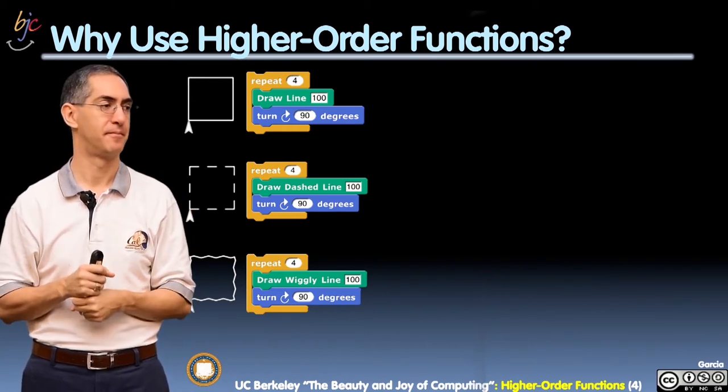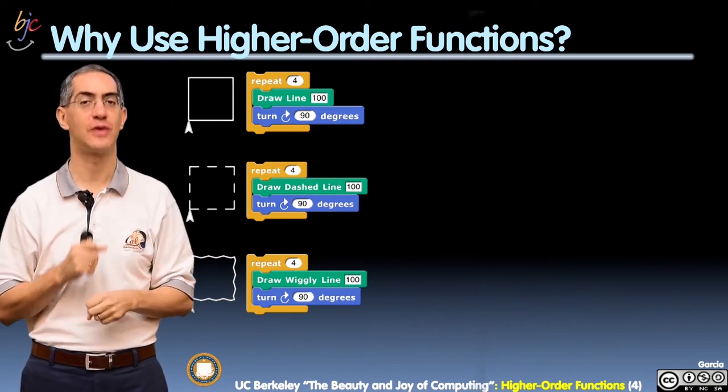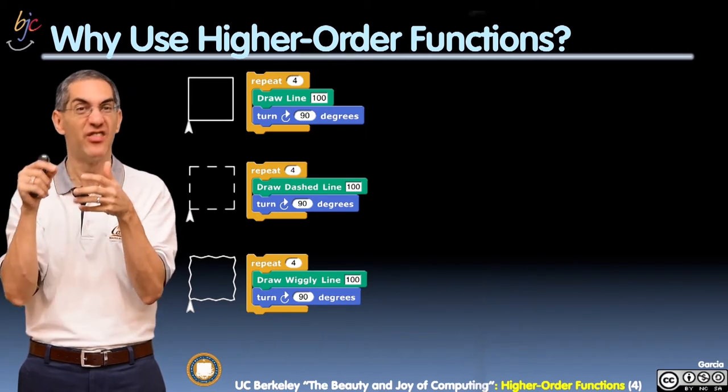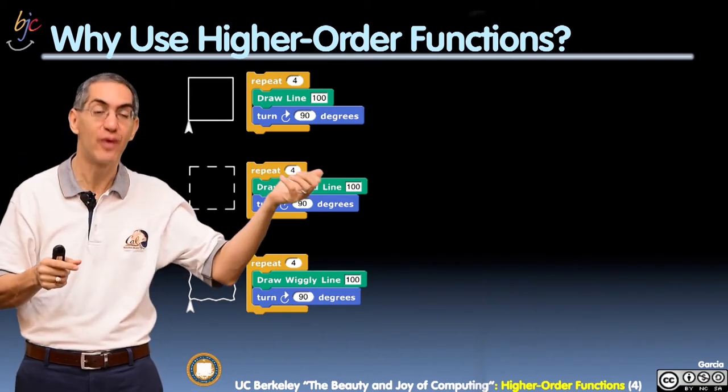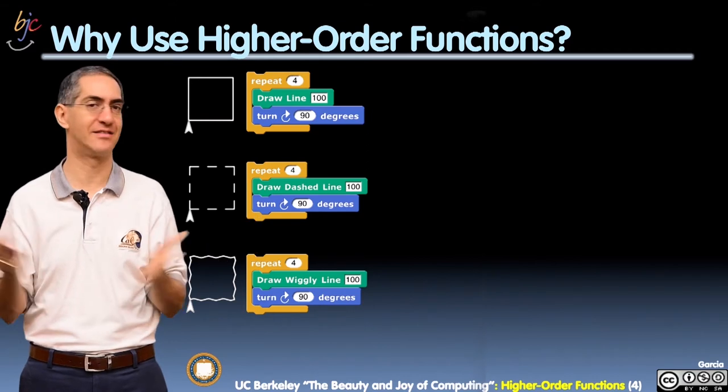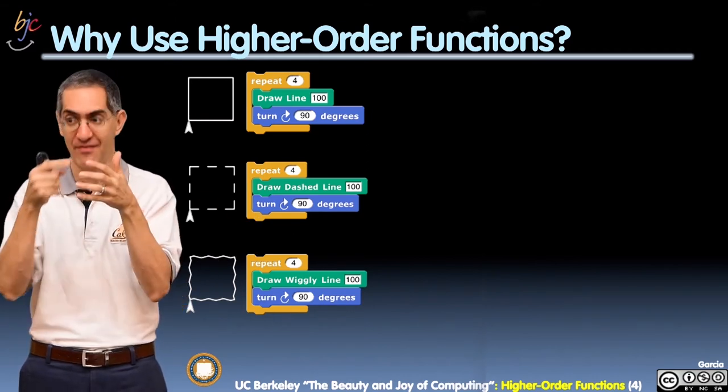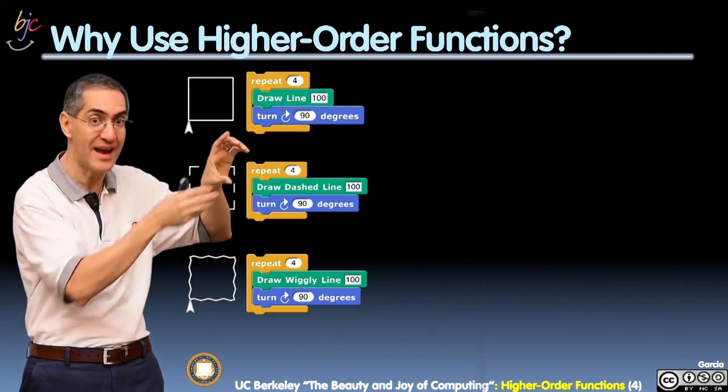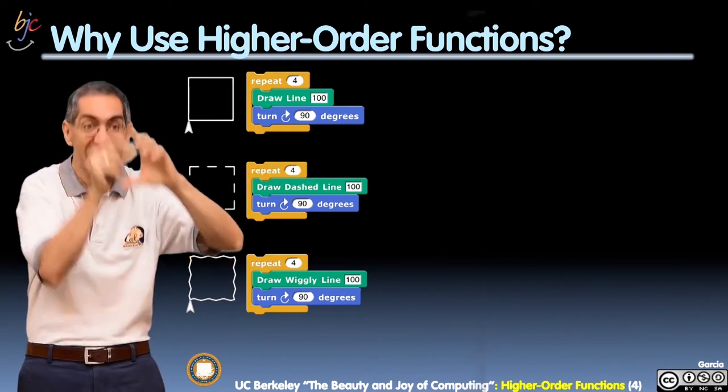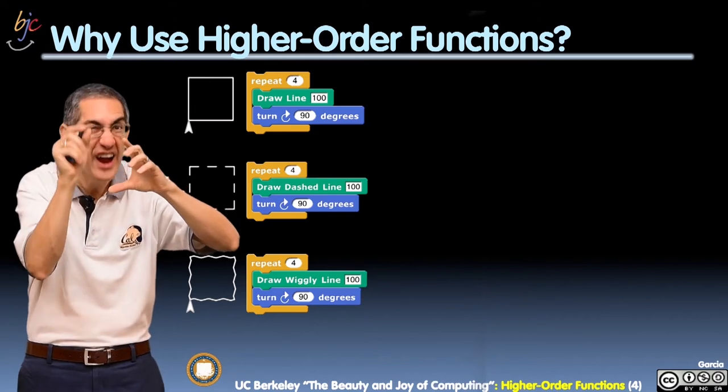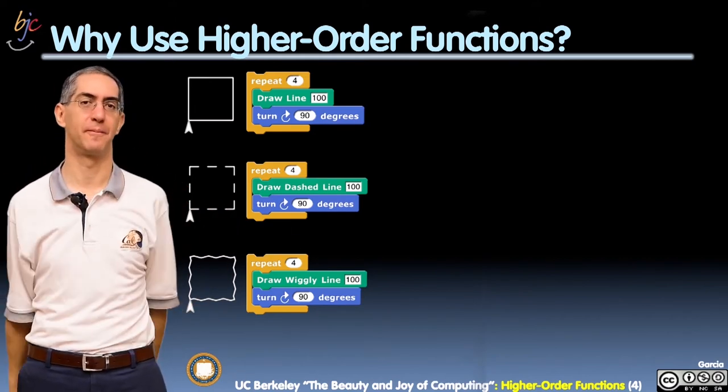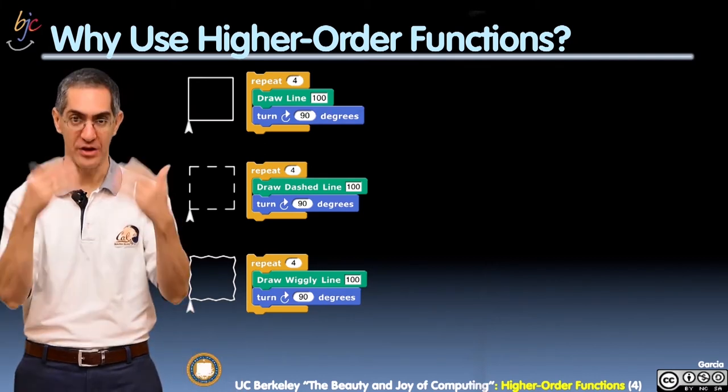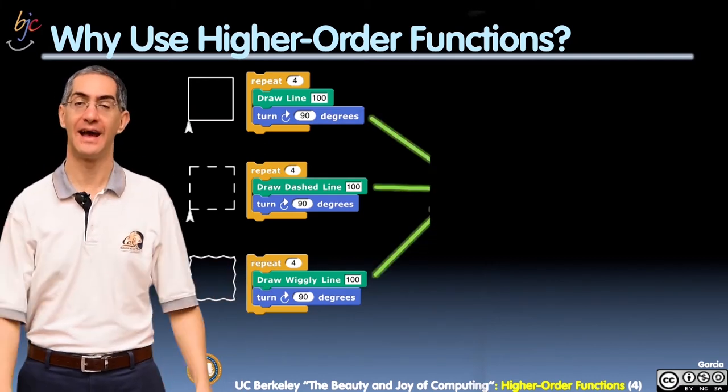How do I generalize that? Without higher order functions, you cannot generalize that. Unless you say, well, put in a number, and if the number is one, make it straight. If the number is two, make it that. And that does not work. It doesn't scale, it's not clean, and you have to have these mappings of a number to the function. You know, an if then, where you do this, these codes are if then, right? Repeat four, if the input kind of line is one, then do, that's just the wrong thing to do. The right thing to do is I hand you the line drawing routine, and you use that in the middle, like this.